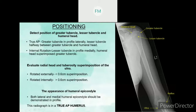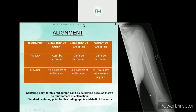Last, the appearance of the humeral epicondyles. To assess positioning, both the lateral and medial humeral epicondyles should be demonstrated in profile. We can then say that the radiograph is in a true AP.